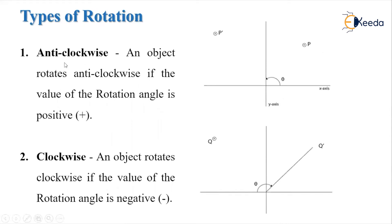The two types of rotations are anticlockwise rotation and clockwise rotation. Whenever we perform the anticlockwise rotation, the rotation angle is always positive, and whenever we perform the clockwise rotation, the rotation angle will be always negative. If we rotate anticlockwise, point P becomes P'; when we rotate clockwise, point Q becomes Q'.